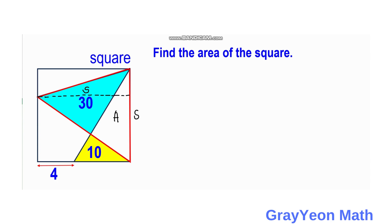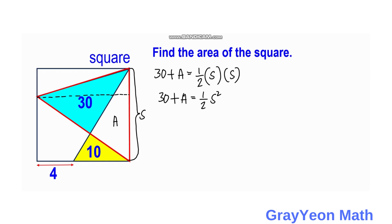Therefore, the area of the combined blue and white regions gives us 30 + A = 1/2 × S × S, which simplifies to 30 + A = 1/2 S². This is our equation 1.